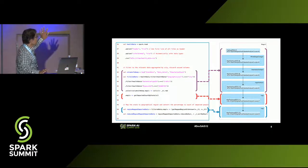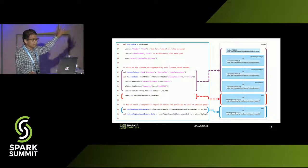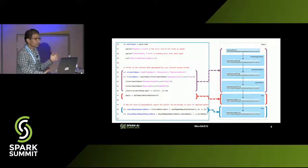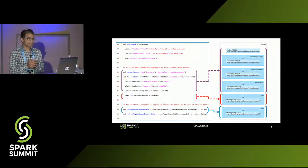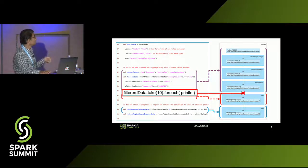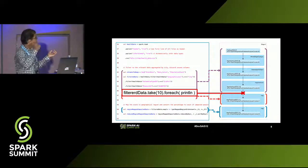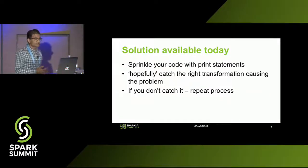To visualize it: code on the left-hand side gets translated into a stage with a whole bunch of RDDs, one per transformation. What if you as a developer suspect the problem is with RDD 10? You're going to have to break your code there and put a print statement in to collect the information. What if that was the wrong place? You're back in the same hell — you have to keep doing this until you get your problem fixed. That's how people are solving the problem today: sprinkle your code with print statements, hopefully catch it, if not, rinse and repeat.